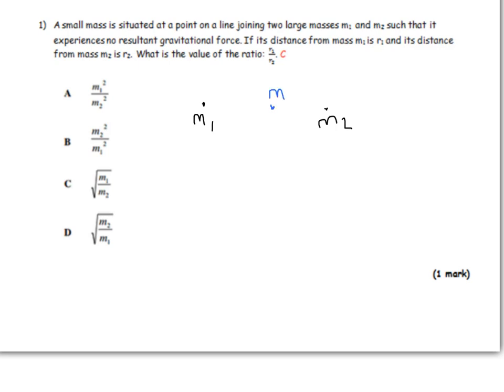So we've got this mass here situated there and the question tells us that distance there is R1 and that distance there is R2. If it's going to experience no resultant force, that means the force from both of them must be equal to each other, equal and opposite.